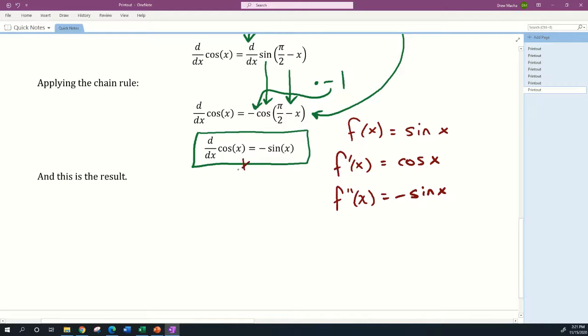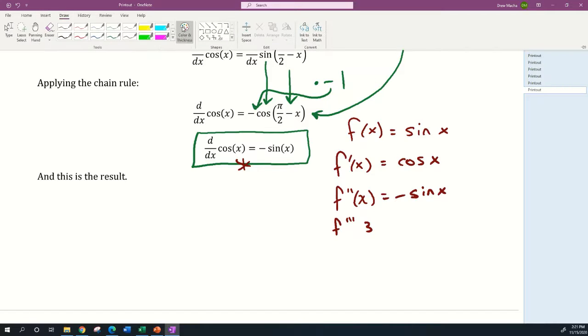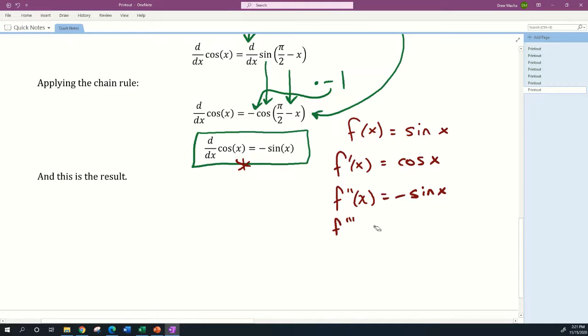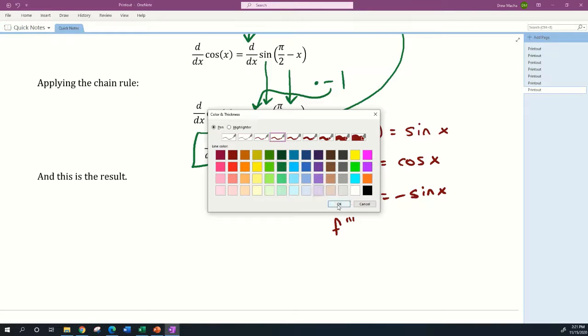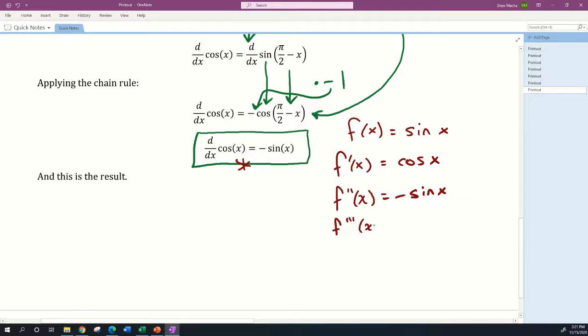Because of this result right here. And then if we were to take the third derivative, f'''(x), we take the derivative of -sin(x), which is going to be -cos(x). You can think of the negative sign as a negative one factor and use derivative homogeneity to ignore it while you take the derivative.